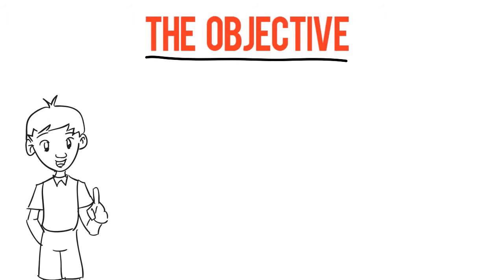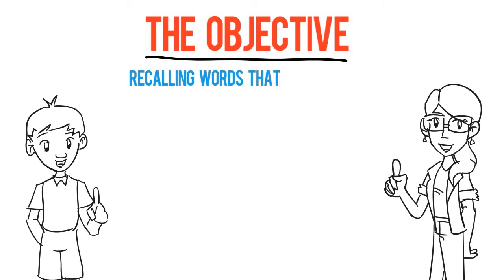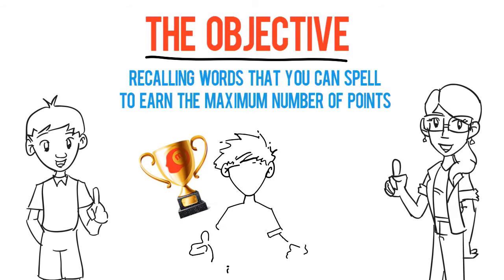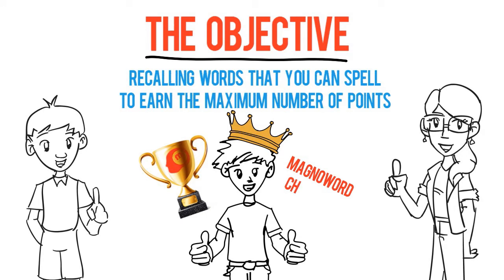The objective of the game is to out-think your opponents by recalling words that you can spell to earn the maximum amount of points, and at the end of six rounds of spelling, the player or team with the most points wins the tournament and is crowned Magno Word Champion.